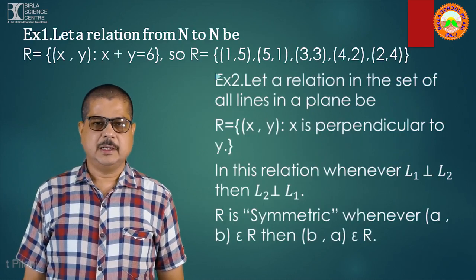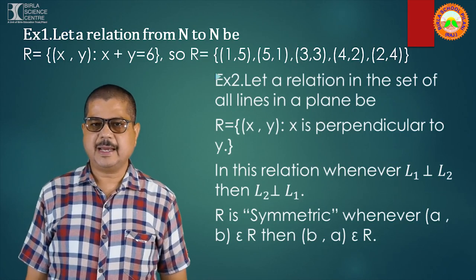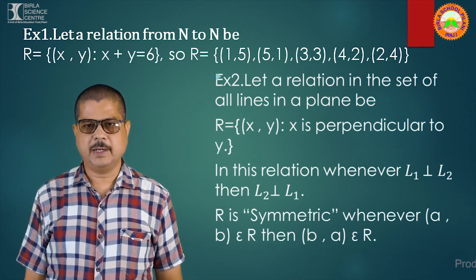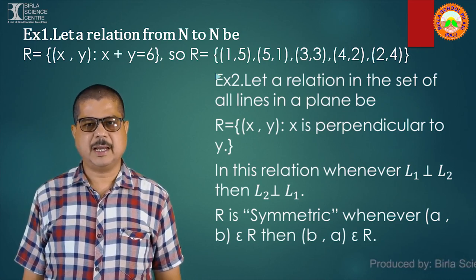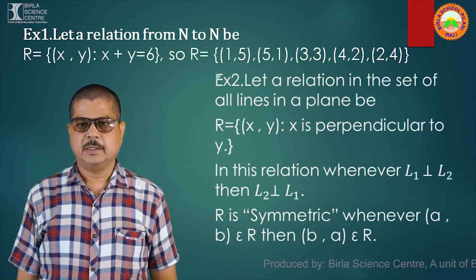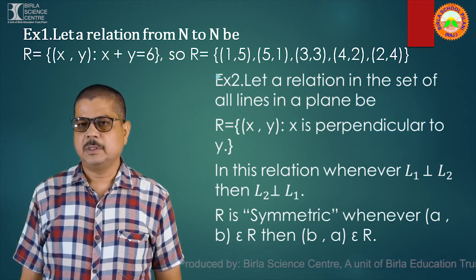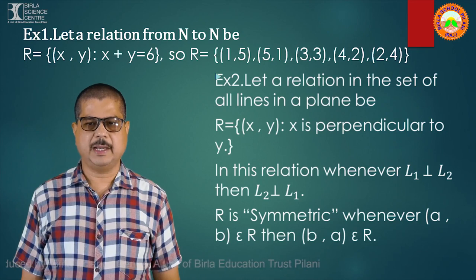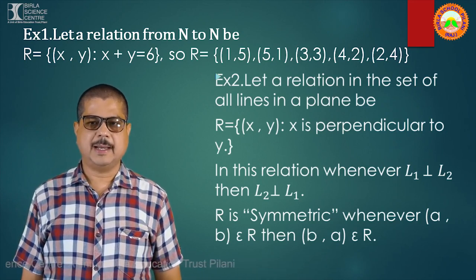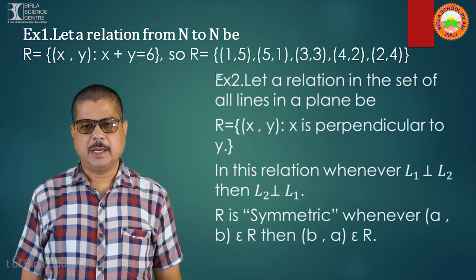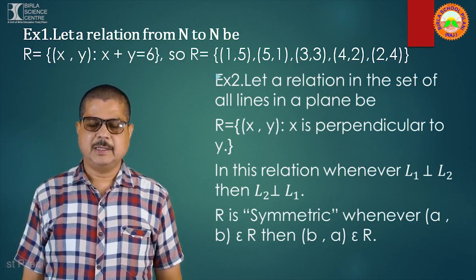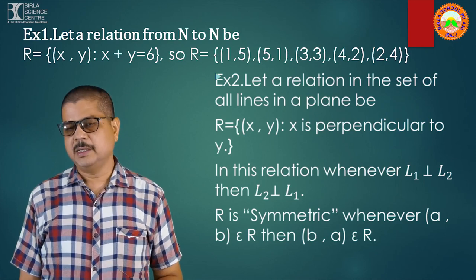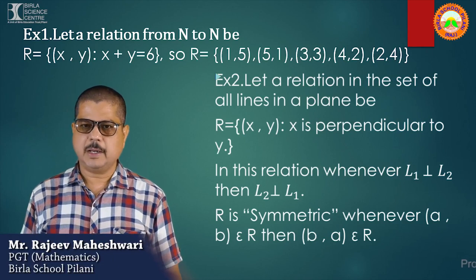Coming to the next relation. Suppose R = {(x,y) such that x + y = 6} and the relation is from N to N. R is given by {(1,5), (5,1), (3,3), (4,2), (2,4)}. Another example: a relation in the set of all lines in a plane given by R = {(x,y) such that x is perpendicular to y}. In this relation, whenever a line L1 is perpendicular to L2, then L2 is also perpendicular to L1. So in both examples, whenever the first element is related to the second, the second element is also related to the first. Such a relation is said to be symmetric — whenever (a,b) belongs to R, then (b,a) also belongs to R.